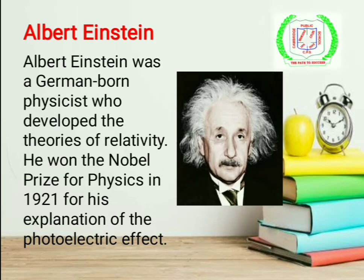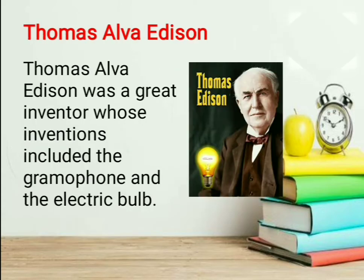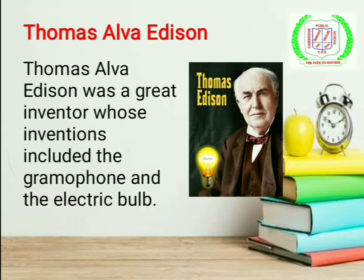Albert Einstein was a German-born physicist who developed the theories of relativity. He won the Nobel Prize for Physics in 1921 for his explanation of the photoelectric effect. Thomas Alva Edison was a great inventor whose inventions included the gramophone and the electric bulb — it is thanks to him that we have electric light today.